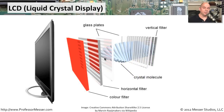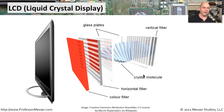These days, a very common display type is an LCD — a liquid crystal display. We don't have tubes, there's no longer an electron gun, and we don't have to worry so much about that electron gun painting the screen. Instead, we have a backlight that is always on on a liquid crystal display. And when we provide power to a transistor, it repolarizes the light so that it can now come through and display a certain color.